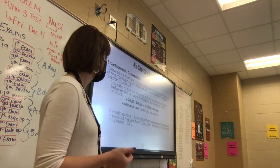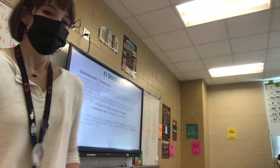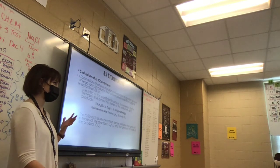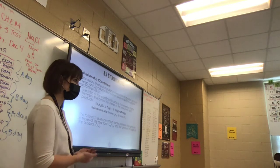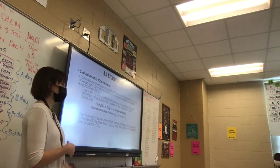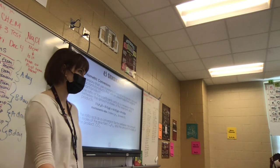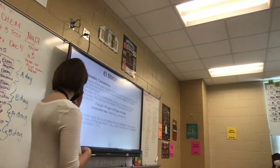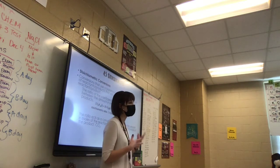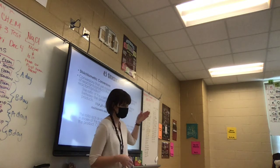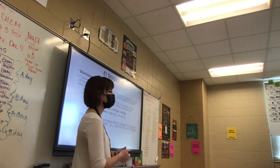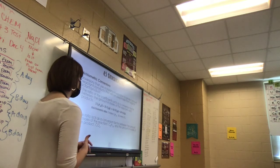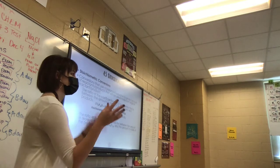Stoichiometric conversions use a balanced equation to predict the amounts of reactants and products. The ratio of coefficients acts as a conversion factor between moles of reactants and products. Like making s'mores — two graham crackers, one marshmallow, three pieces of chocolate — you can ask how many pieces of chocolate you need for a given number of graham crackers, or how many s'mores you can make with a given number of marshmallows.